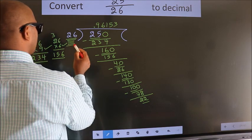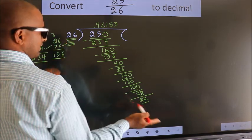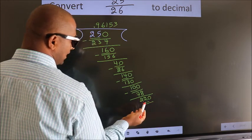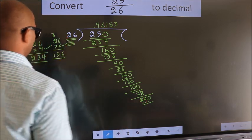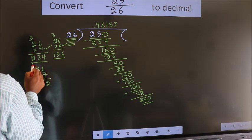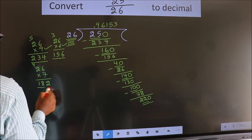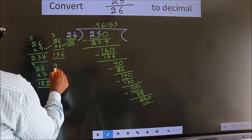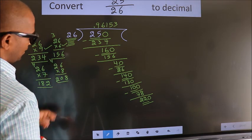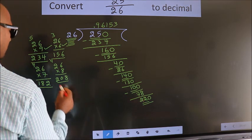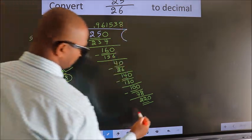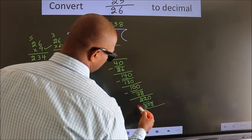Here we have 22, here 26. 22 is smaller than 26. We already have the decimal, so we can directly take 0. So 220. A number close to 220 in the 26 table — let us go with 7: 26×7=182. Let us even check with 8: 26×8=208. 208 is close to 220, so we should go with 8 times. So 26 eights is 208. Now we subtract. We get 12.